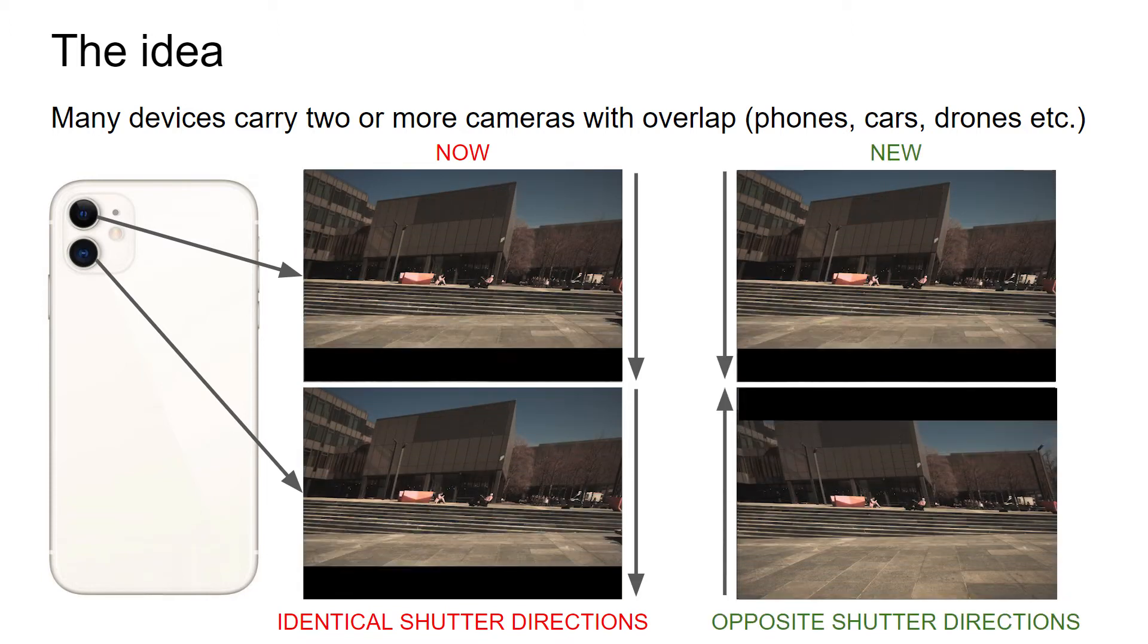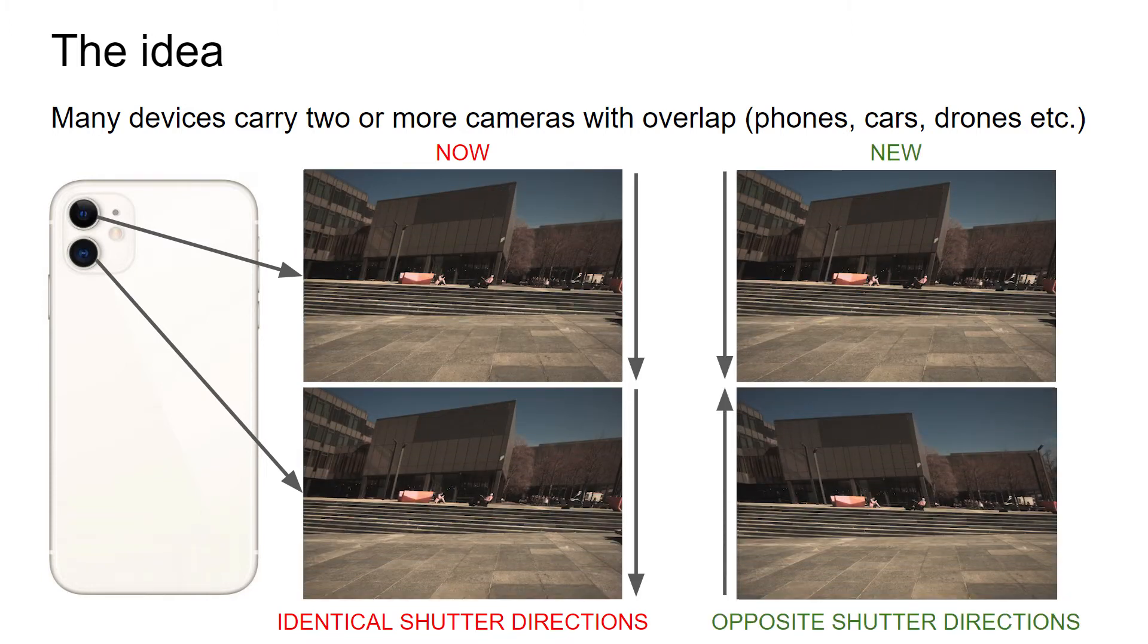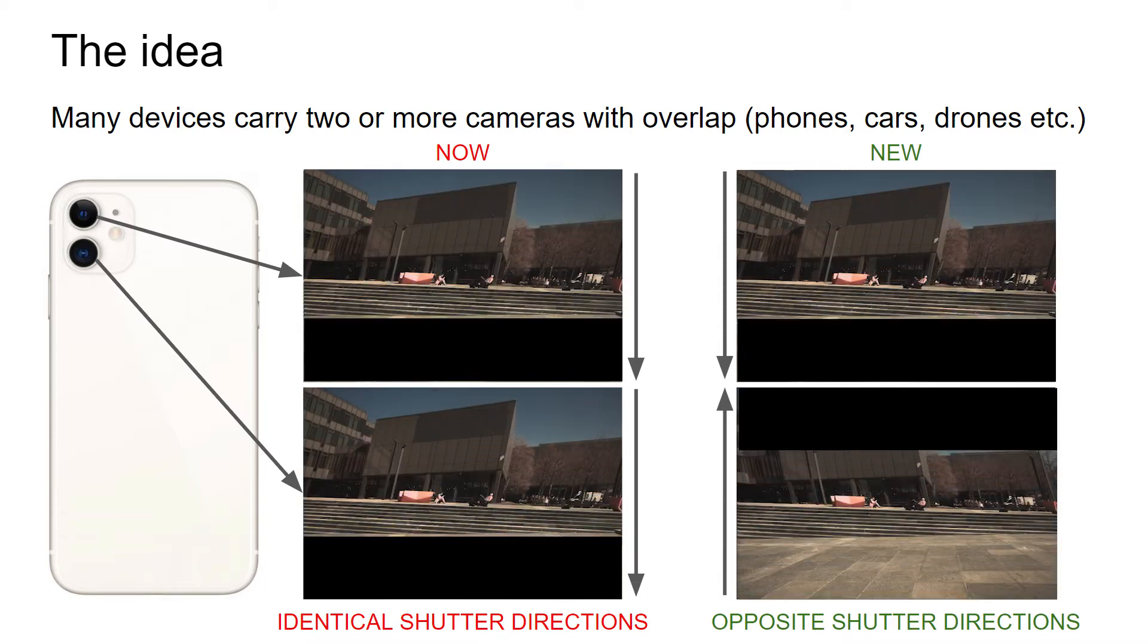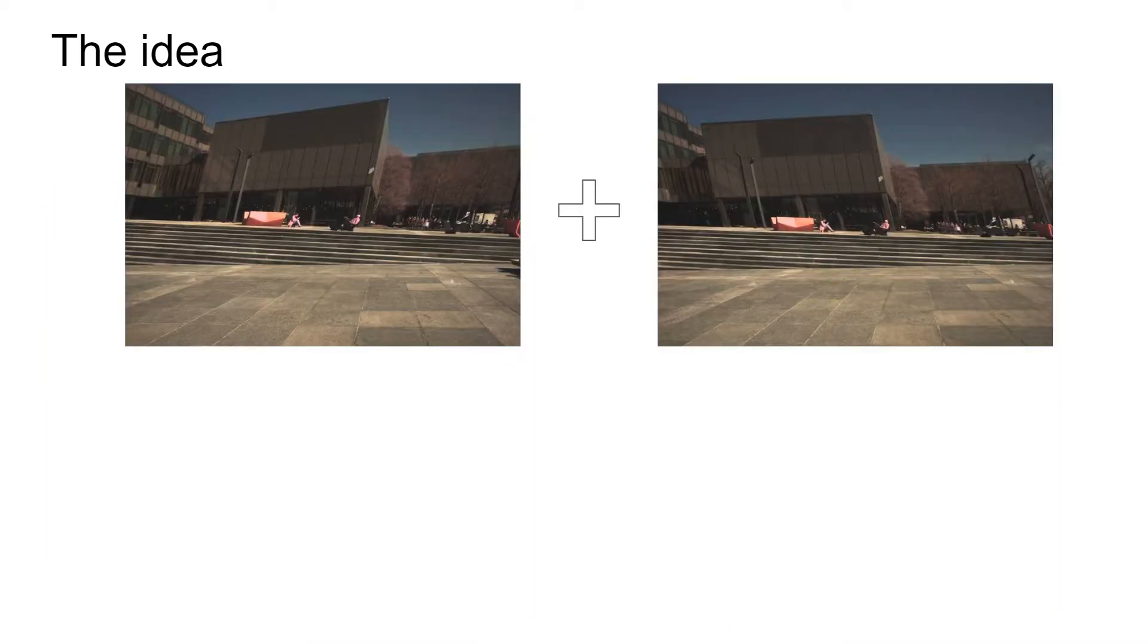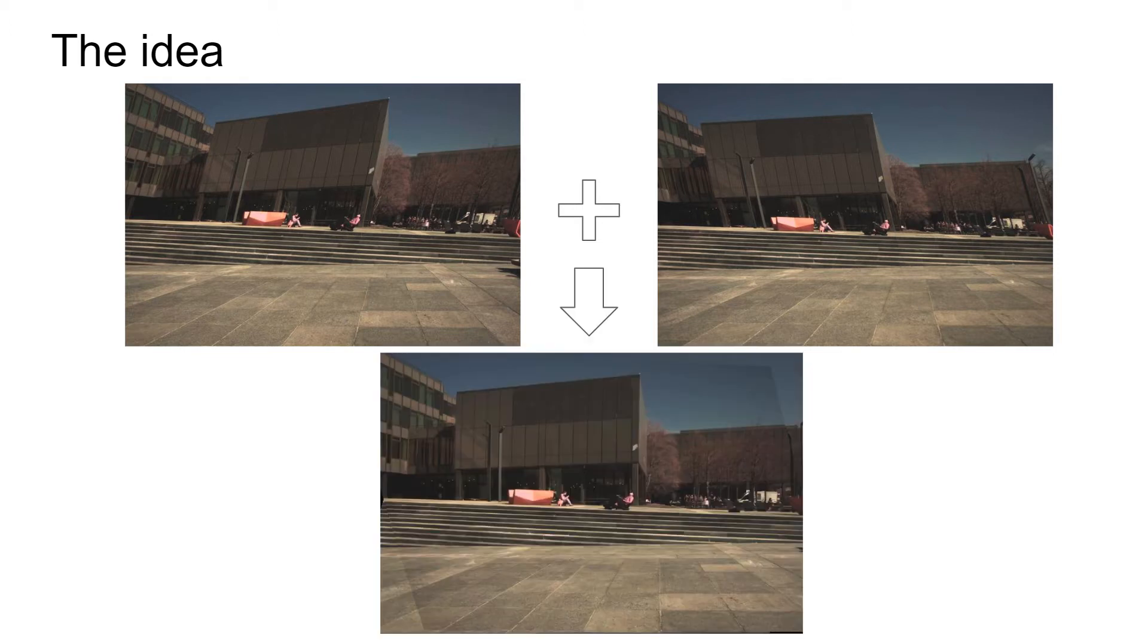Instead, we propose to roll the shutters in the opposite direction, such that the distortions are as different as possible. Our algorithms can then utilize these differences to compute the camera motion, remove the distortions, and other things, which will be shown later.